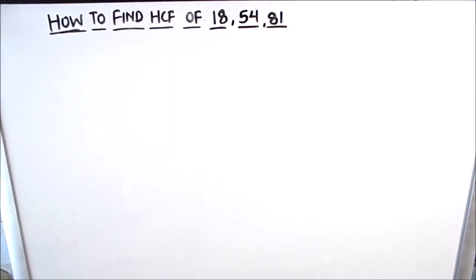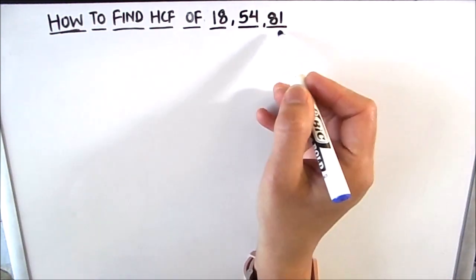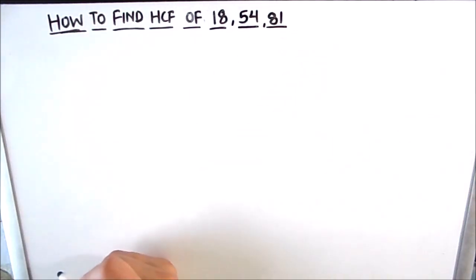Hello students! Today in this video we are going to learn how to find the HCF of three numbers — 18, 54, and 81 — using the prime factorization method. HCF, as the name suggests, is the Highest Common Factor, meaning it is a number which divides all three numbers fully without leaving a remainder.